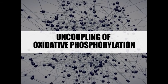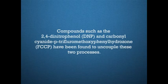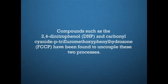Let's come to uncoupling of oxidative phosphorylation. The two processes, electron transport and oxidative phosphorylation, are very tightly coupled normally. However, during resting when oxidative phosphorylation is minimal, the electrochemical gradient across the inner mitochondrial membrane builds up to such an extent that it prevents further pumping of protons, thus inhibiting the transport of electrons also. Compounds such as 2,4-dinitrophenol (DNP) and carbonylcyanide-P-trifluoromethoxyphenylhydrazone (FCCP) have been found to uncouple these two processes. In some specialized fat cells, mitochondrial respiration is normally uncoupled from ATP synthesis. In these cells, known as brown fat cells, most of the energy of oxidation is dissipated as heat rather than being converted into ATP.